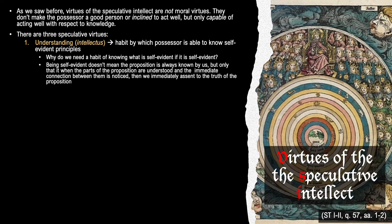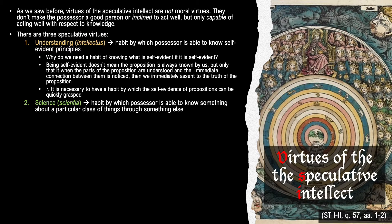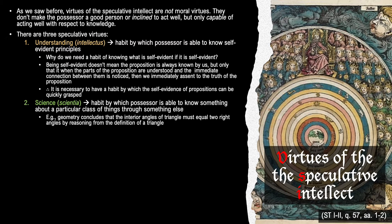Understanding is the virtue which allows us to assent to self-evident principles quickly. The second speculative intellectual virtue is called science, or in Latin, scientia. Science is the habit by which the possessor is able to know something about a particular class of things through something else. For instance, geometry concludes that the interior angles of a triangle must equal two right angles by reasoning from the definition of a triangle. With understanding we assent to self-evident principles, but with science we assent to conclusions known by means of those self-evident principles.